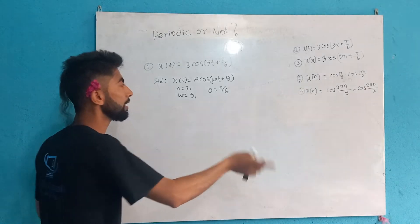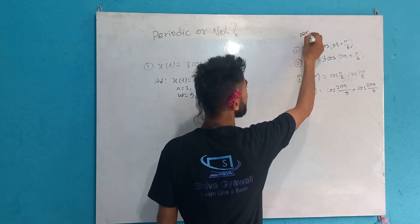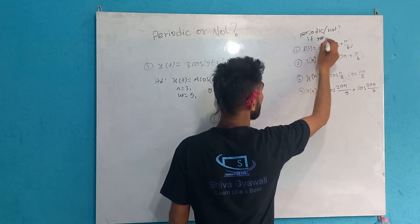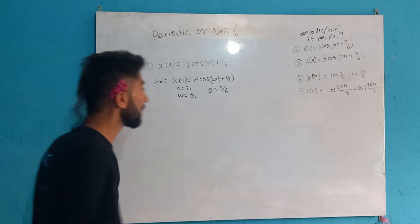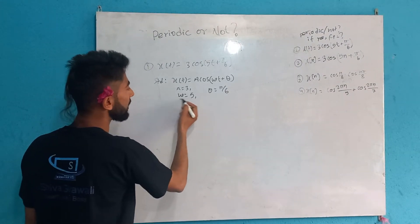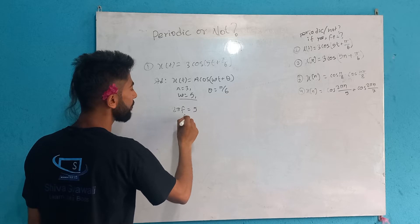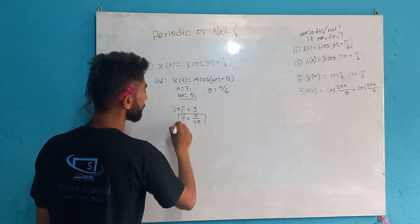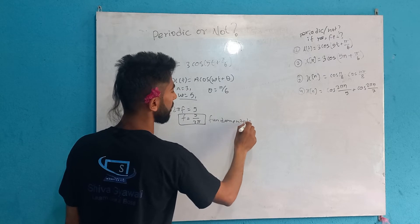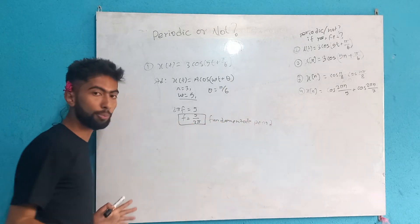Continuous-time square wave, sine, and cosine signals are periodic. Why? Because they are periodic by nature. To identify the fundamental period, since ω = 5, we find T = 2π/ω = 2π/5. This is the fundamental period of the given signal. It is obviously periodic with this period.